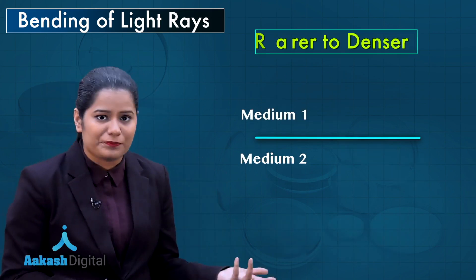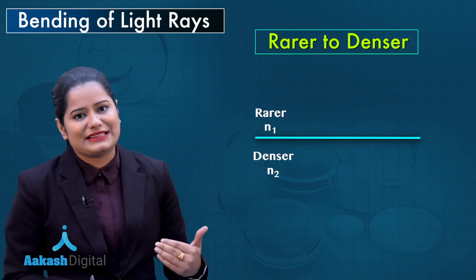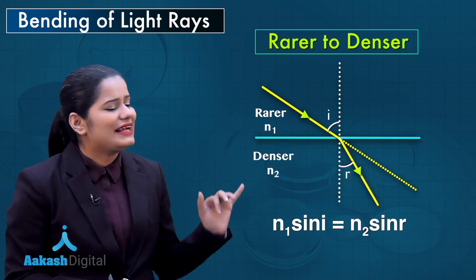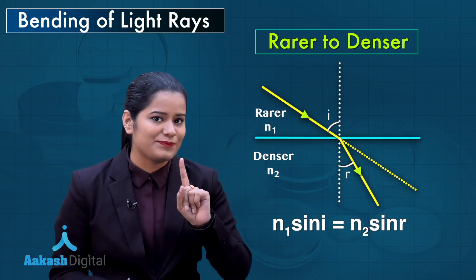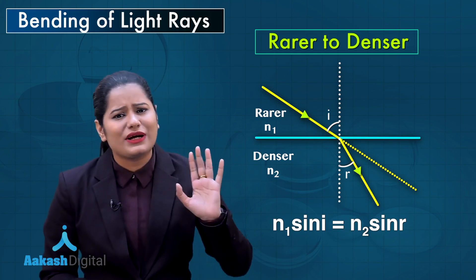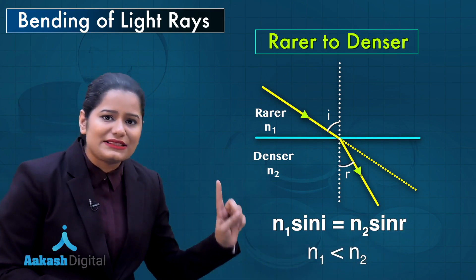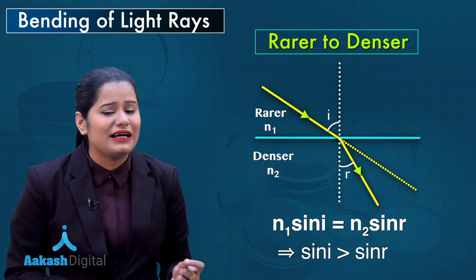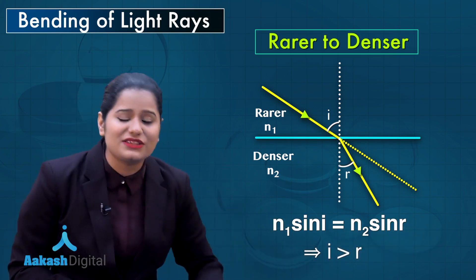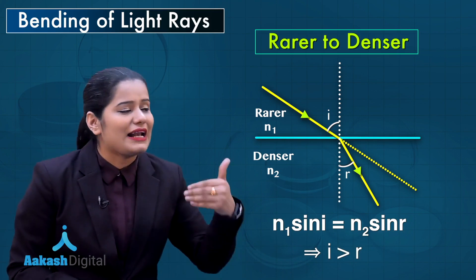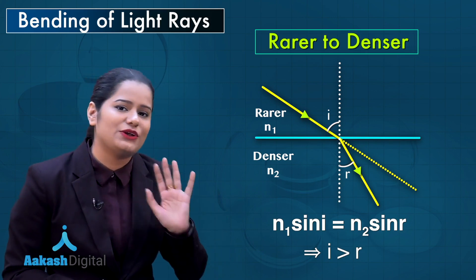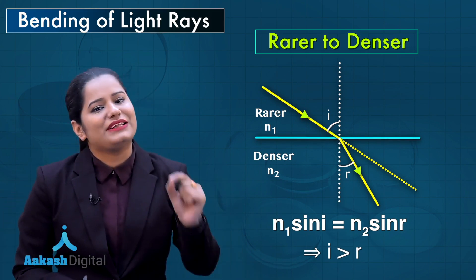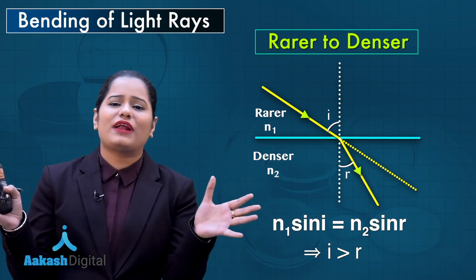Now suppose medium 1 is rarer and medium 2 is denser, and light is going from the rarer to the denser medium. Applying Snell's law: n1 sin i = n2 sin r. In this case, n1 is less than n2, so to hold Snell's law, sin i must be greater than sin r, meaning i must be greater than r — the angle of incidence must be more than the angle of refraction. The angle of refraction will be less if the light bends towards the normal, which is why light going from rarer to denser medium bends towards the normal.